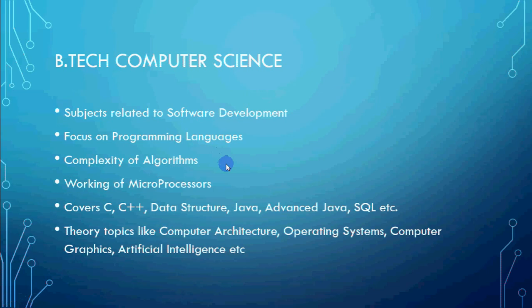The other option is BTECH in IT, which is more or less similar — you have almost the same subjects as in Computer Science. But the focus is more on web development. You also learn about microprocessors — not exactly chip programming, but how your processor works and what assembly language is. If you are doing IT, you will have more focus on web development, which means PHP and JavaScript. IT is basically Information Technology — how we can spread information using computer science. Data analysis and database management systems are more focused. But more or less subjects are the same, and believe me, when it comes to companies' placement, there is no difference between CS or IT streams.